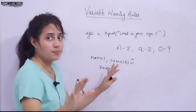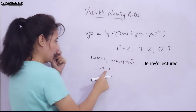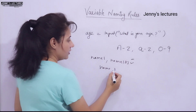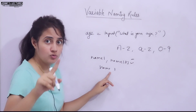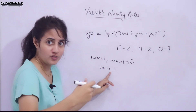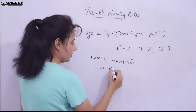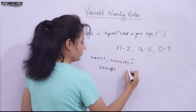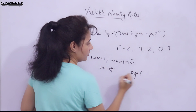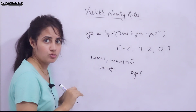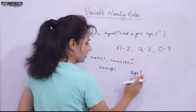No special symbol other than underscore is allowed. Space is not allowed — so 'name one' with a space is invalid. Hash is not allowed, and a question mark like 'age?' is also not allowed. Any special symbol other than underscore is not permitted in a variable name.